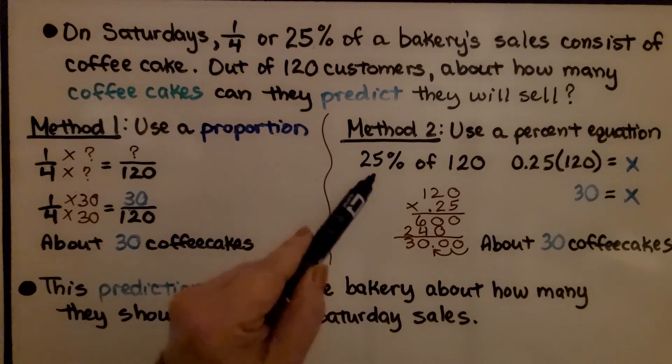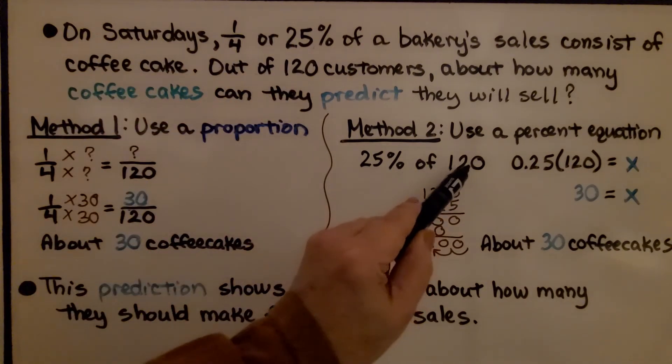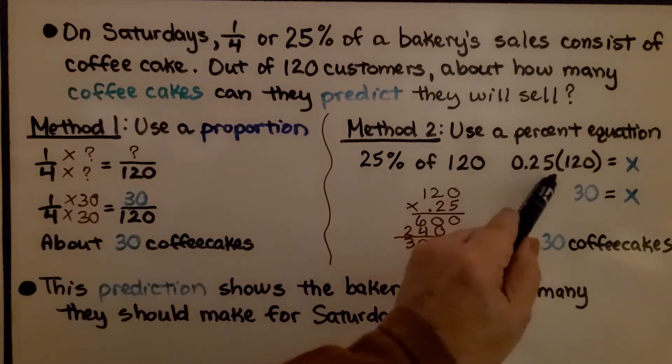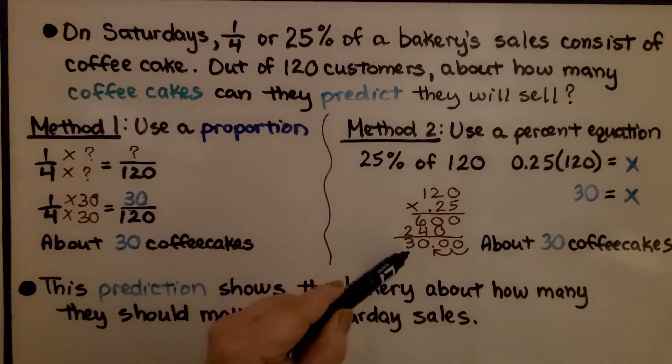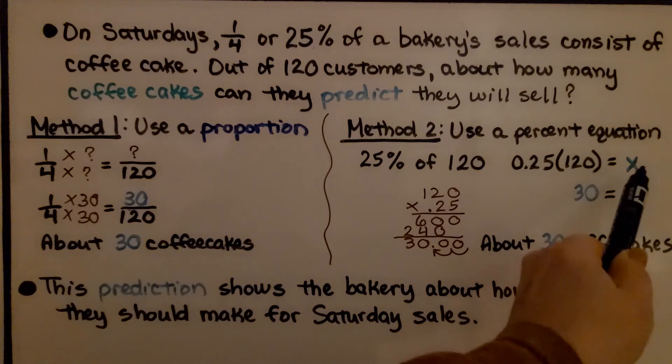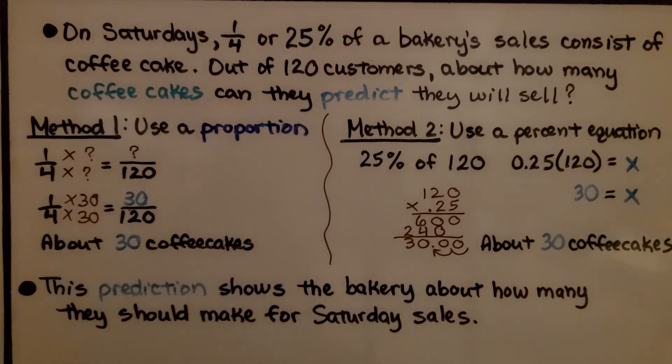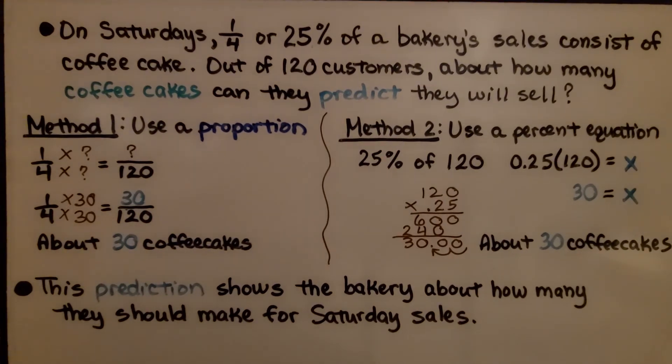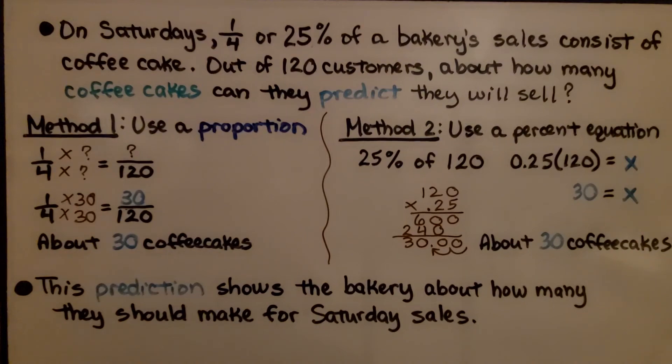Using the percent equation, we find 25% of 120. We multiply 0.25 times 120, and we have two hops in the equation, so there's two hops in the product. It's about 30 coffee cakes. We solve it for x to do it algebraically and find the value of x as 30. Now, this prediction shows the bakery about how many they should make for Saturday's sales. And maybe they should make a few more just in case there's more than 120 customers. Because this was just a prediction, they could sell a little more or a little less.